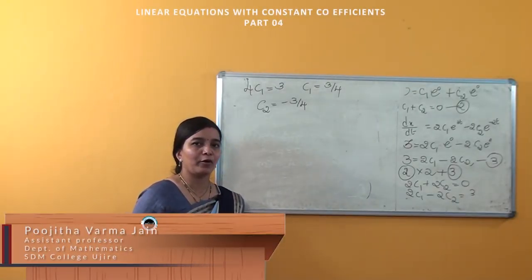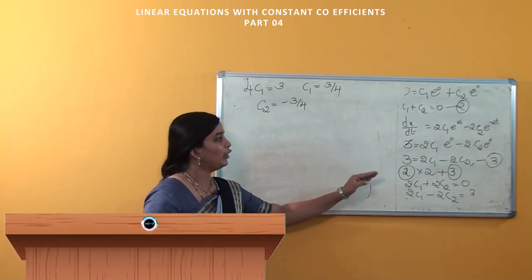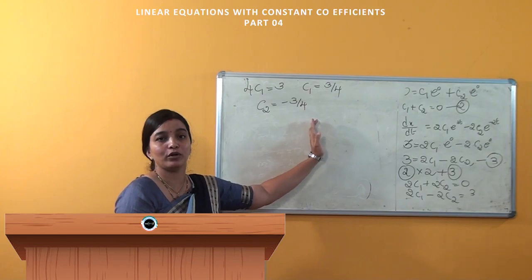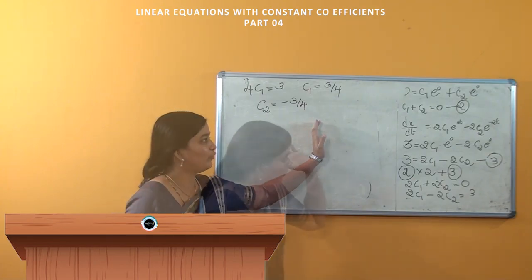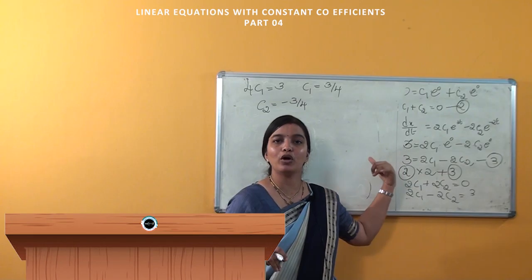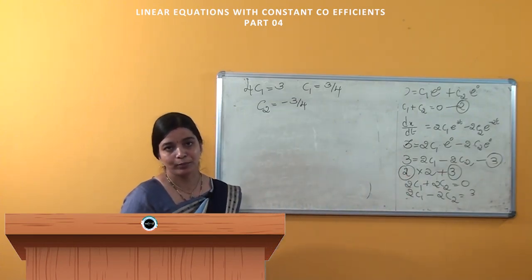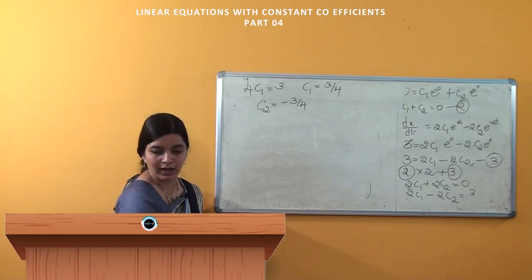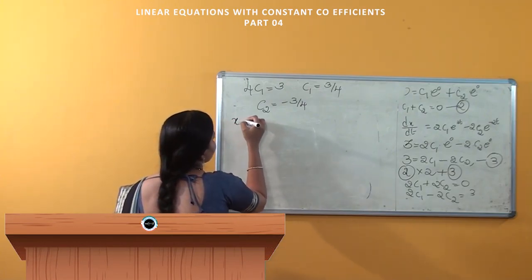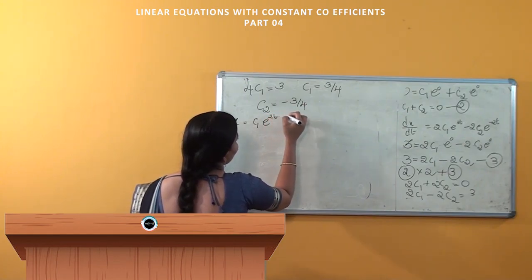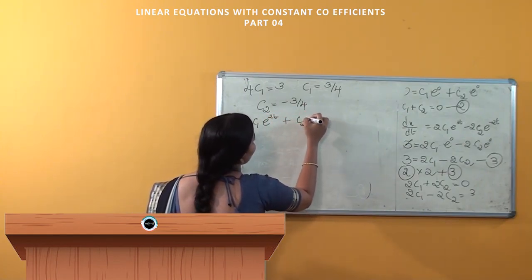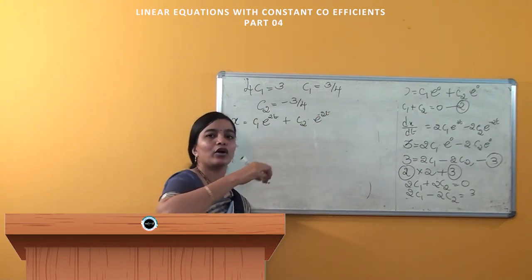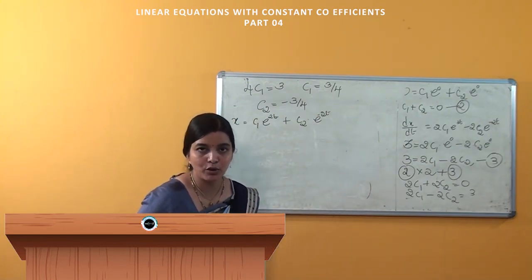While solving the previous problem, we obtained C1 = 3/4 and C2 = -3/4. The C2 value can also be found using equation 2 or equation 3. The first equation was x = C1·e^(2t) + C2·e^(-2t), since we got the roots as +2 and -2.